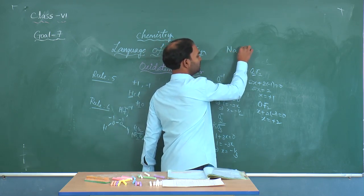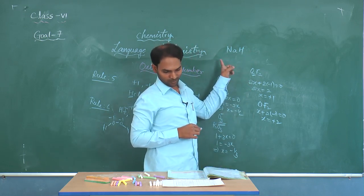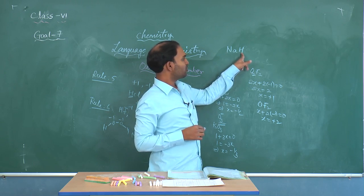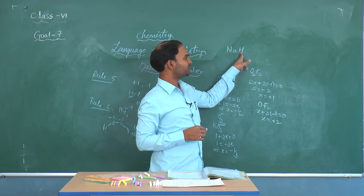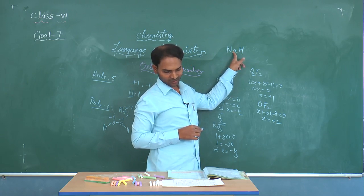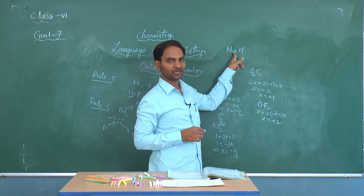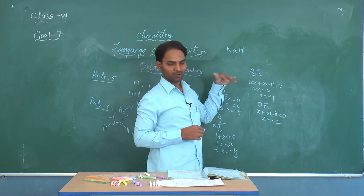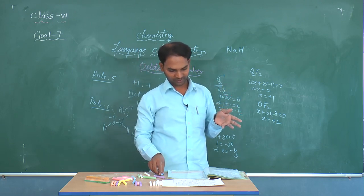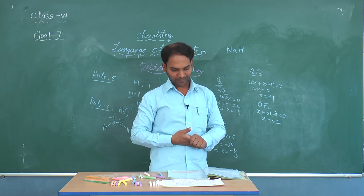Next, they ask the oxidation number of sodium in sodium hydride (NaH). In metal hydrides, hydrogen acquires a negative charge (-1), so sodium acquires a positive charge. Therefore, the oxidation number of sodium in sodium hydride is +1.